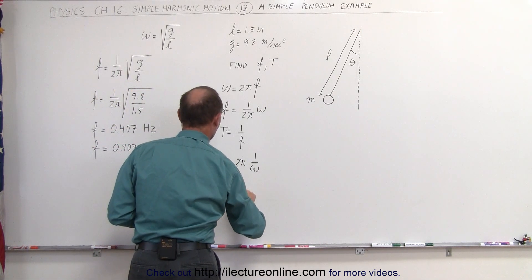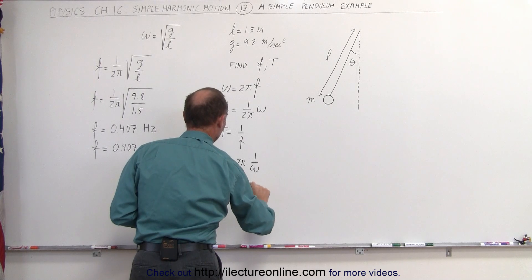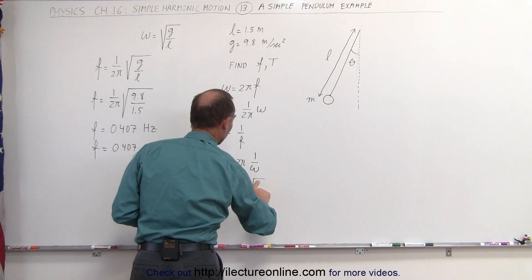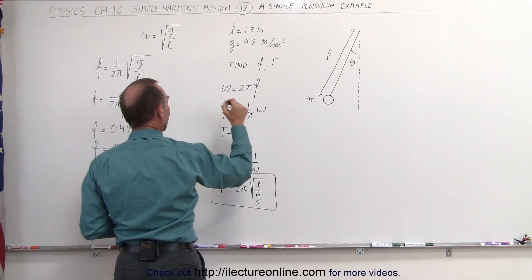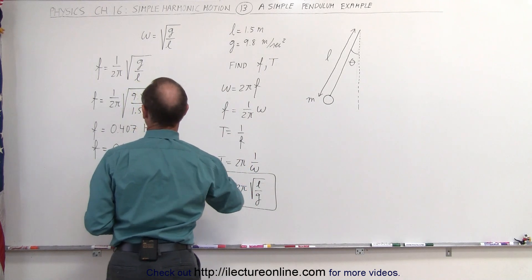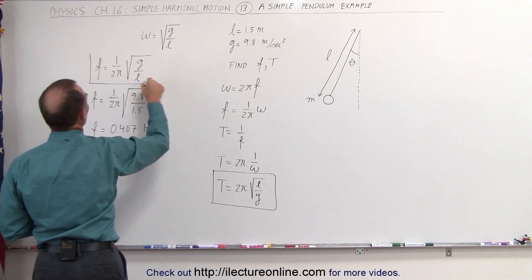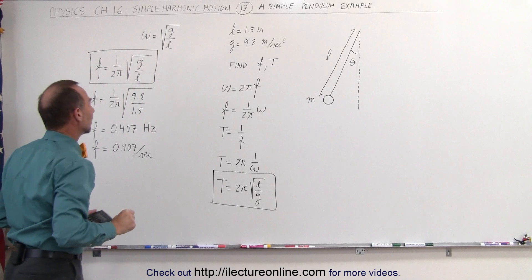The period can then be written as 2 pi times the square root of l divided by g. This is the general equation for the period of a pendulum, and this is the general equation of the frequency of the pendulum.